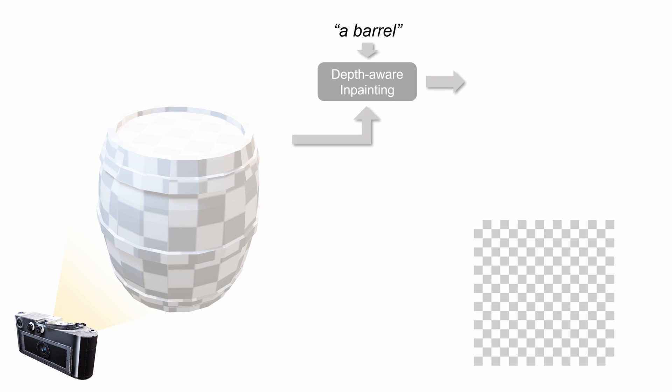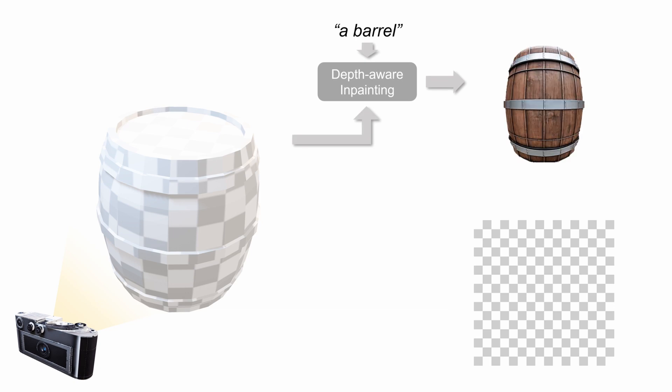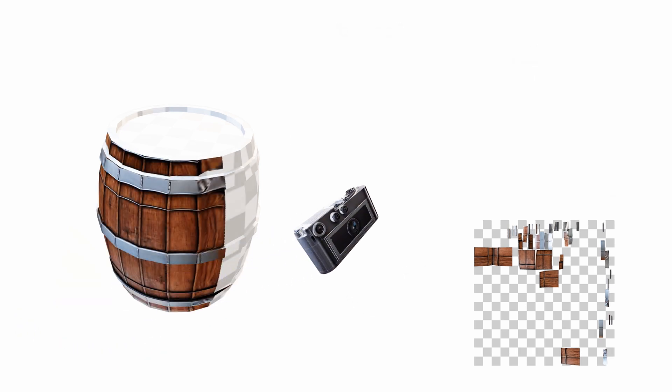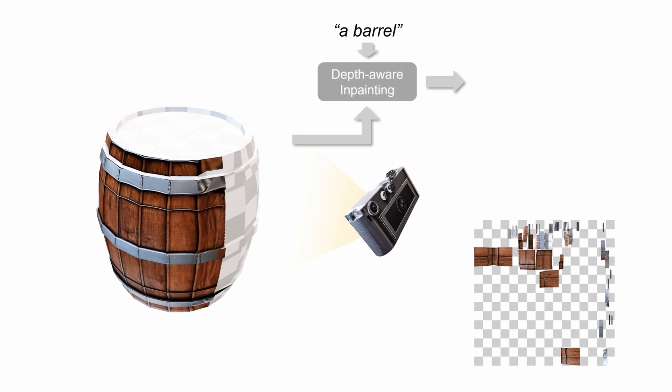Starting with the input mesh, we follow a predefined sequence of viewpoints to generate 2D images of the object, using the text prompt as an input to a depth-to-image diffusion model. We repeat the painting process for all predefined viewpoints to obtain a coarse texture.